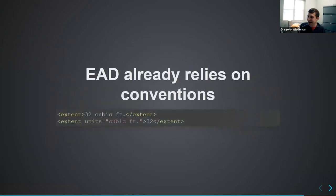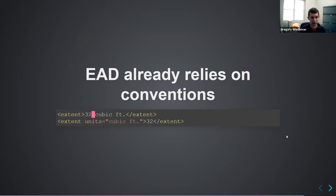We're already relying on conventions for structure for how we're using EAD. Here's an example that bugs me: two valid extent elements in EAD 2002. The second example, which puts 'cubic feet' in a units attribute, is actually more structured and a better encoding from an XML perspective. Yet if you try to import that into ArchivesSpace or ArcLight, both will ignore the units attribute. Instead, they recognize the first space in the extent field to separate the units and the number. The only reason for this is a convention established by the EAD toolkit in the late 1990s that everyone copied. So we're already relying on these conventions as part of our practice — if we standardize our structure, we can rely on them for implementations.